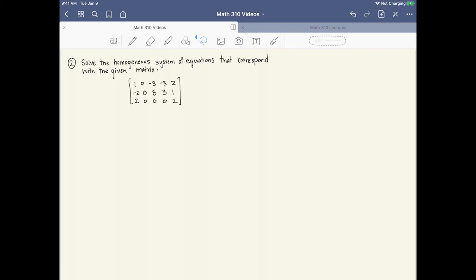Let's now take a look at the second example. In this example, we're going to be solving a homogeneous system of equations that corresponds with the given matrix. So what does that mean? What does solving the homogeneous system that corresponds mean? Well, what we're looking at here is a matrix, but this is the coefficient matrix of some system of equations.